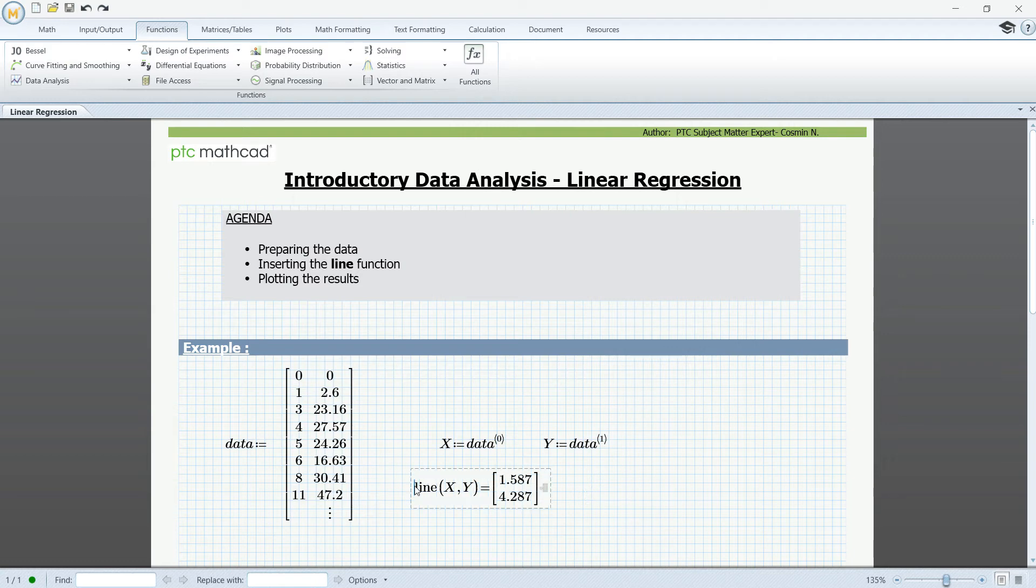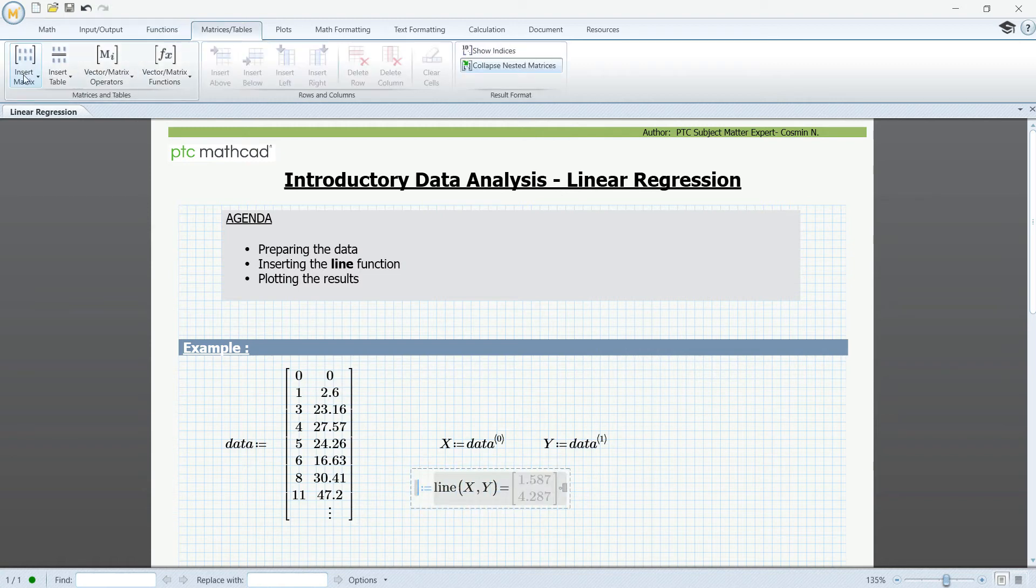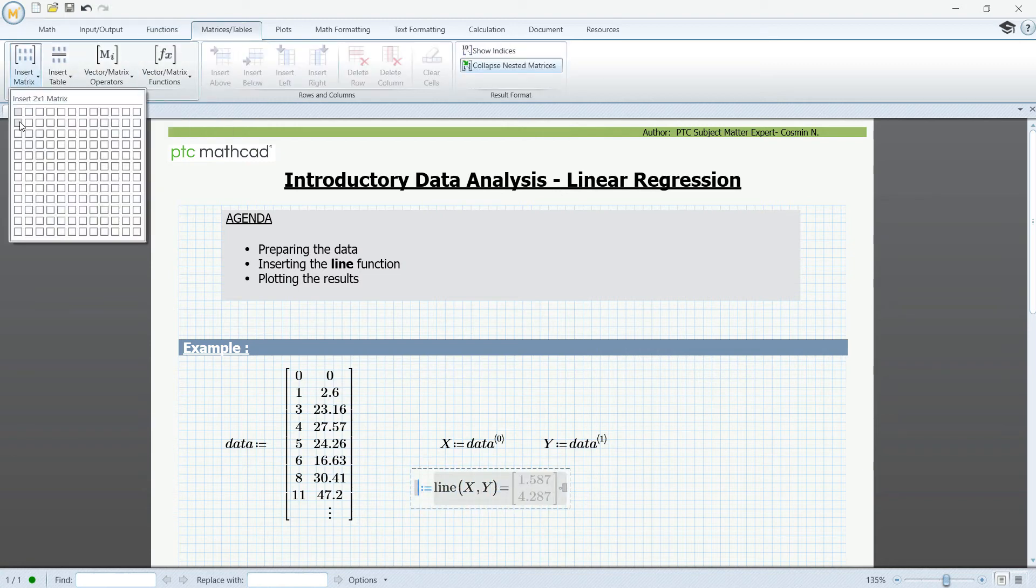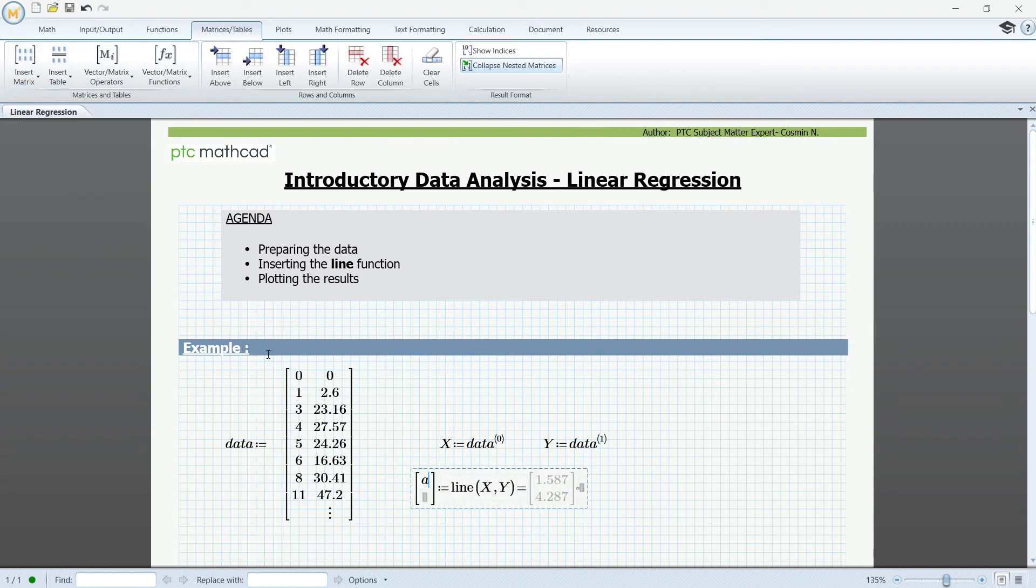We can insert a definition operator, and go to the matrices and tables tab and insert a two-by-one matrix. I'm going to type in here the name of the variables a and b. a will be the intercept, and b will be the slope.